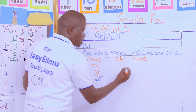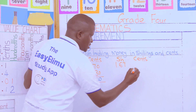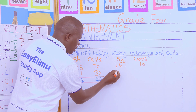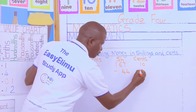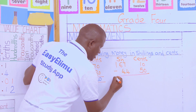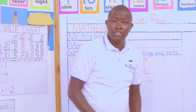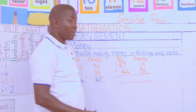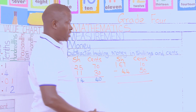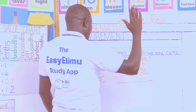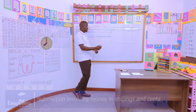Let us try another example. On the shilling side we have 167 shillings and 10 cents, we are taking away 44 shillings and 50 cents. Remember, alignment is very key. Starting from the right side, we start with the cents: 10 cents take away 50 cents.